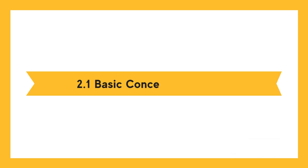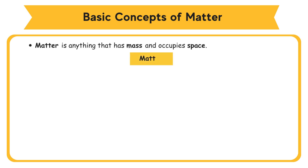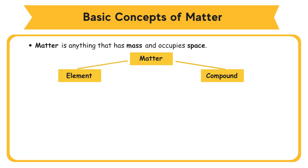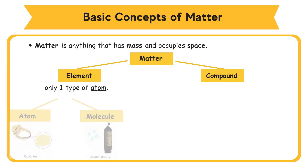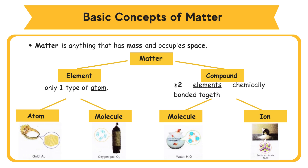2.1 Basic Concepts of Matter. Matter is anything that has mass and occupies space. Matter is classified as element and compound. An element is a substance that contains only one type of atom. A compound is a substance that consists of two or more elements chemically bonded together.